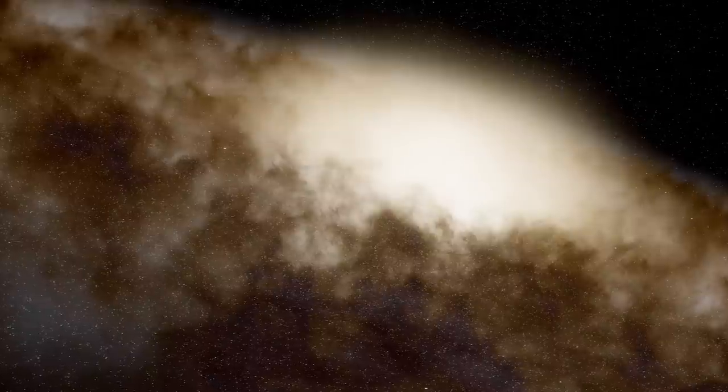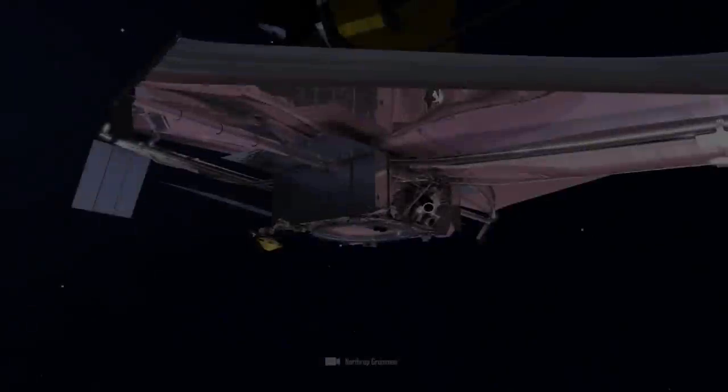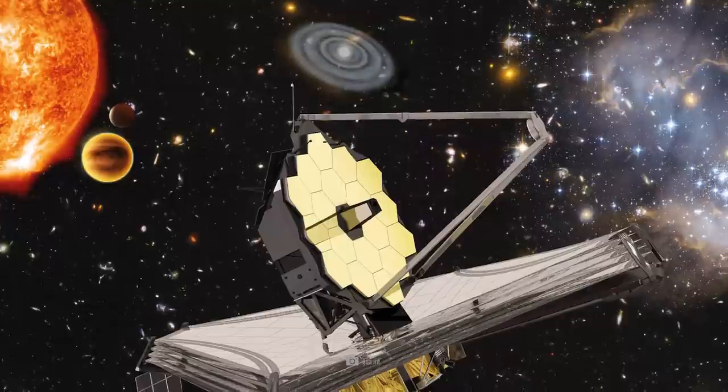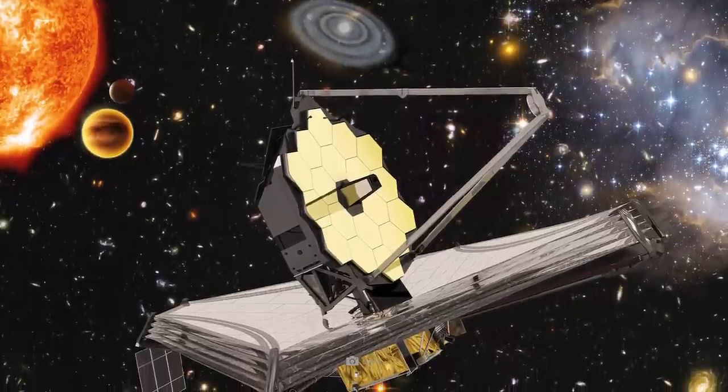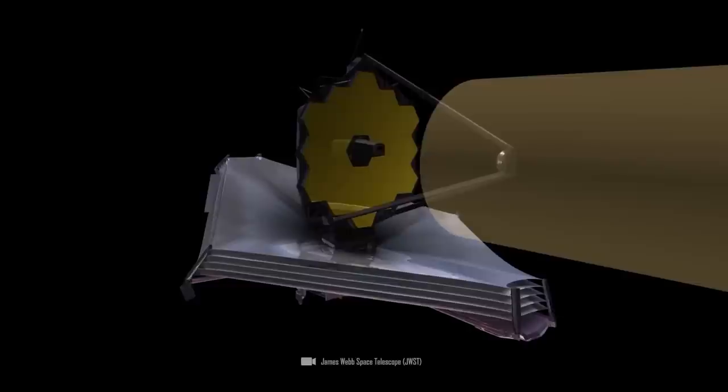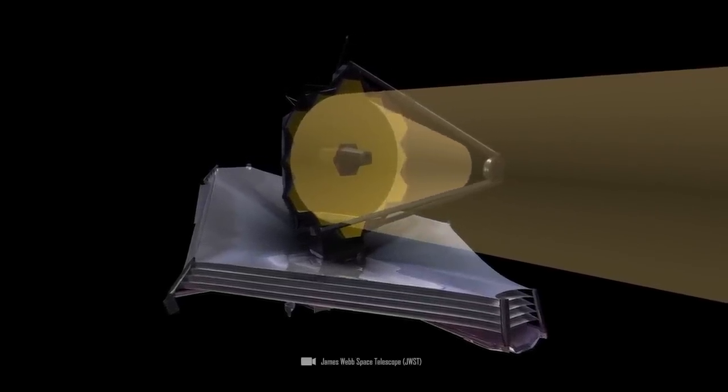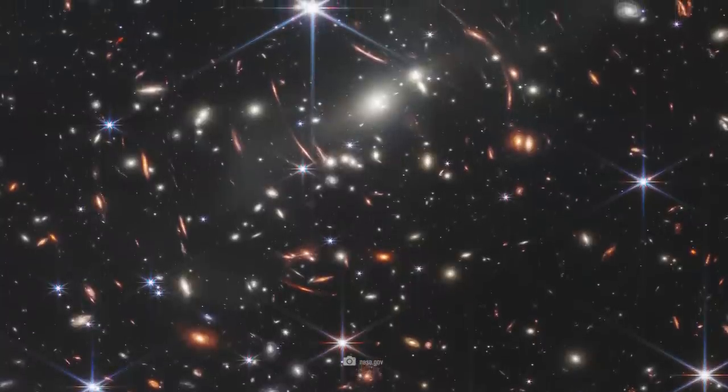But this unique observation also proves to us once again how insightful the use of the James Webb Telescope already is. Without the technical help of the most powerful space telescope of all time, it would probably have been impossible to identify JD-1 in the gigantic expanses of space, according to scientists.